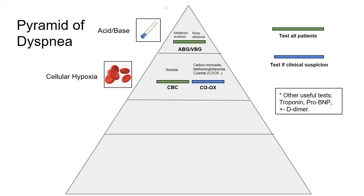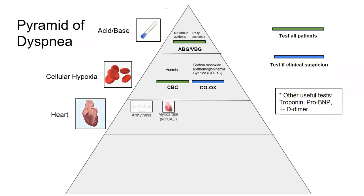For hypoxia, you need your heart to be pumping blood to the rest of your body. The two major things to think of are arrhythmia or MI. What would you want to send on all these patients? An EKG — part of every workup. Troponin and pro-BNP can be helpful as well.